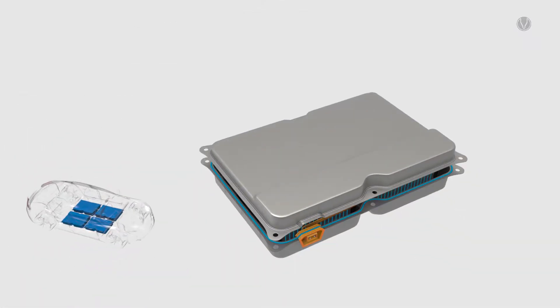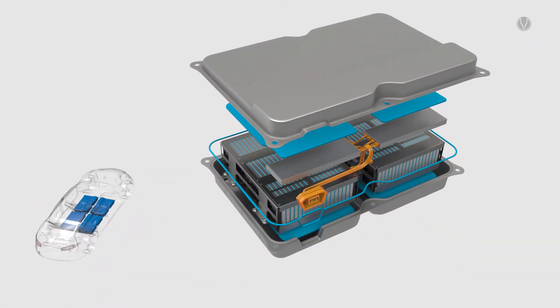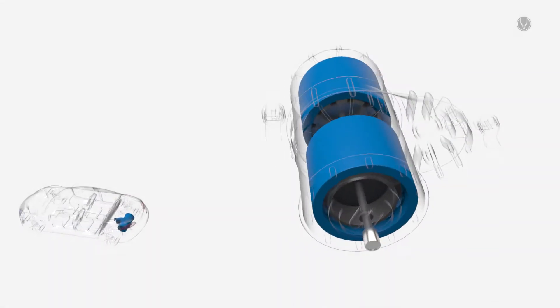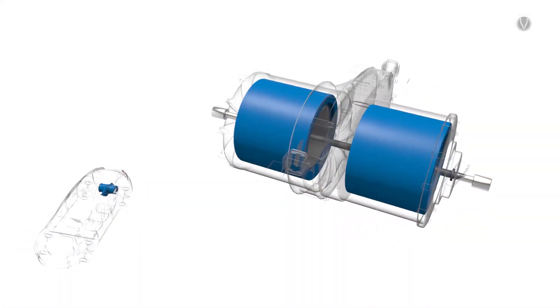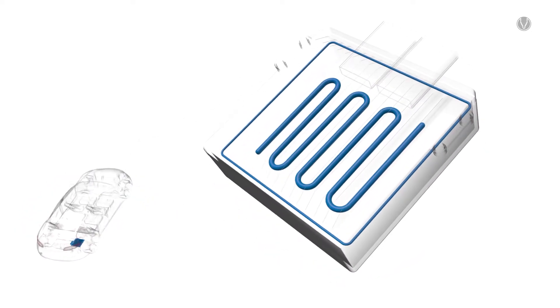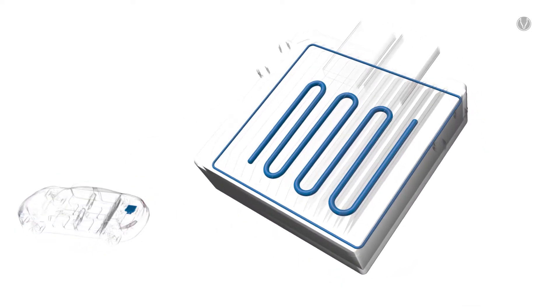Heat conducting media ensure reliable heat transfer both in the high voltage battery and in the electric motor. A liquid seal protects the sensitive power electronics from chemical and corrosive influences.